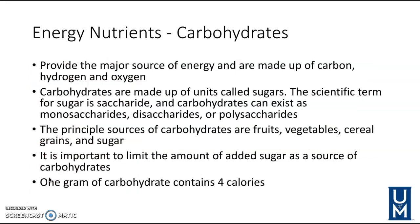The first energy nutrient is carbohydrates — our major source of energy, made up of units called sugar. Main sources include fruits, vegetables, cereal grains, and sugar. It's important to limit extra added sugar since fruits and vegetables already have a natural sugar component. One gram of carbohydrates contains four calories.